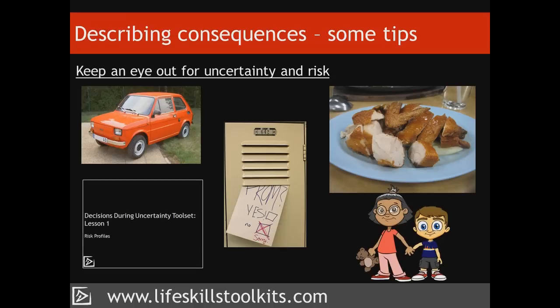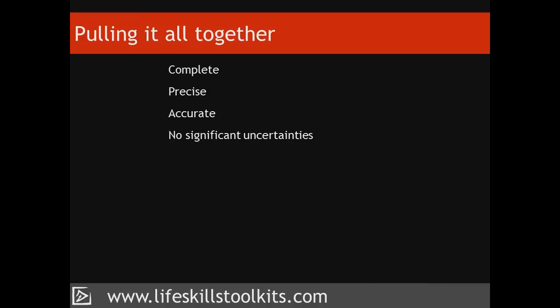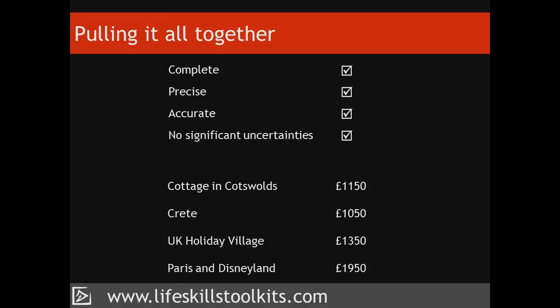For the Petersens, the only uncertainty they perceive is whether or not the children would enjoy the selected holiday; based on previous experience, they don't consider this uncertainty significant. Having identified your consequences — ensuring they are complete, precise, accurate, and contain no significant uncertainties — you're ready to pull this information into a consequences table. Before constructing it, check your list of alternatives for any that are inferior. The Petersens notice their week in Paris including Disneyland at £1,950 is well in excess of their £1,500 budget, so they drop that alternative.